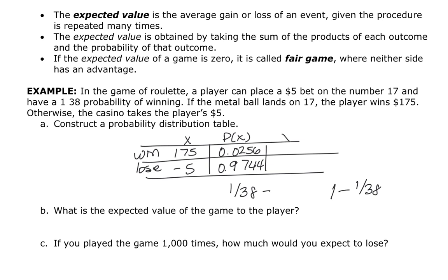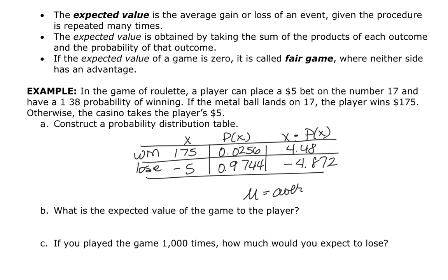To find the expected value, I take each item in the X column and multiply it by the probability of that happening. So X times P(x) for the win is 4.48, and X times P(x) for the loss is negative 4.872. The expected value — mu — is the sum of this column, which is negative 0.392.